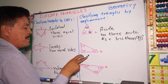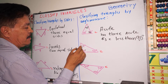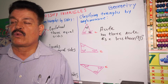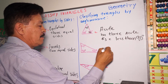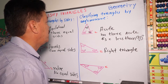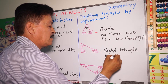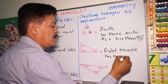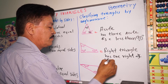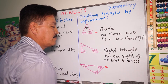The next triangle has an angle of 90 degrees, 65 degrees, and 25 degrees — but one angle is a right angle. So this kind of triangle is called a right triangle. A right triangle has one right angle, which is equal to 90 degrees.